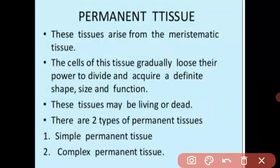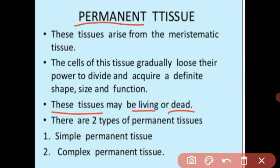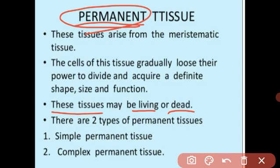As I explained in the organ system, we form from a single small cell. The permanent tissue can be living or dead. There are two main types of permanent tissue: simple permanent tissue and complex permanent tissue.